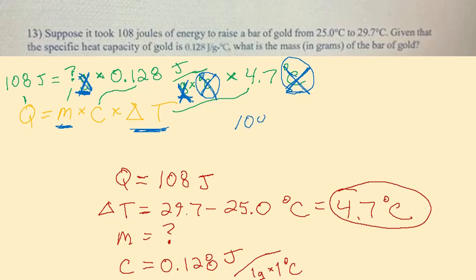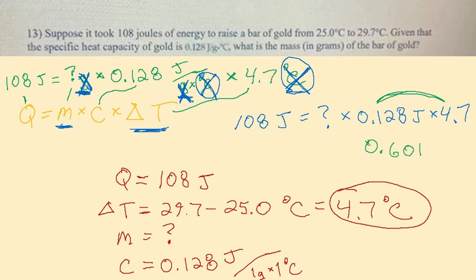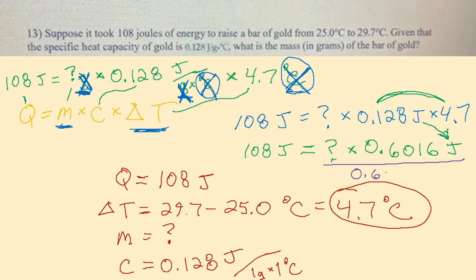Now we have a very clean equation: 108 joules equals question mark times 0.128 joules times 4.7. We can go ahead and multiply 0.128 and 4.7, which equals 0.6016, and we carry the joules unit with it. So now we have: 108 joules equals question mark times 0.6016 joules. To solve this equation, we divide both sides by 0.6016 joules in order to get that to cancel out.